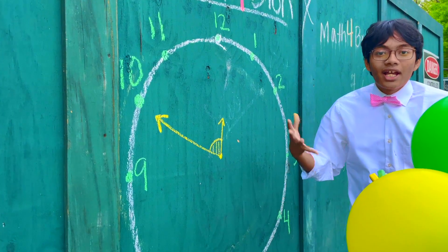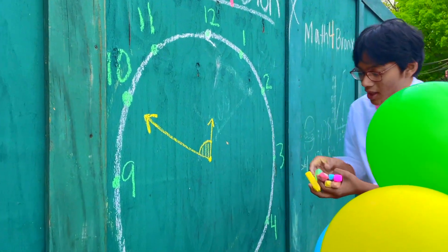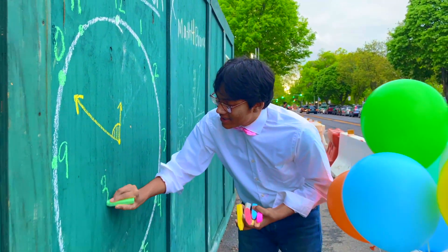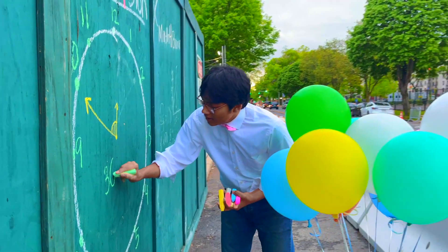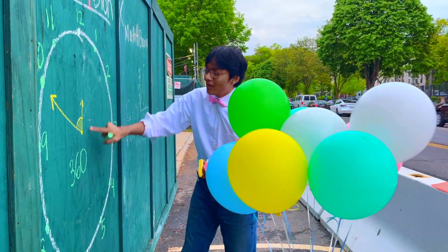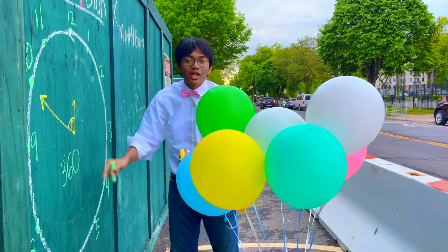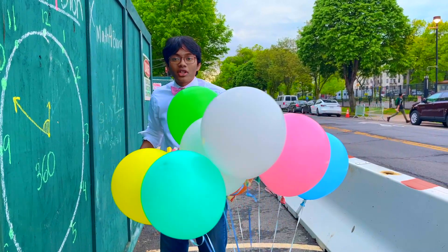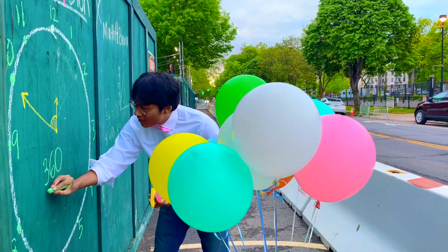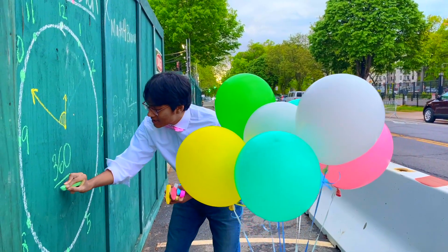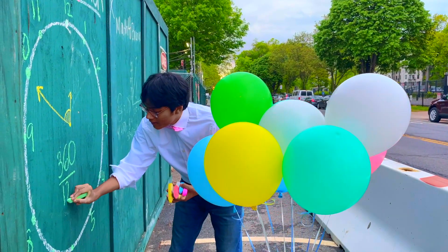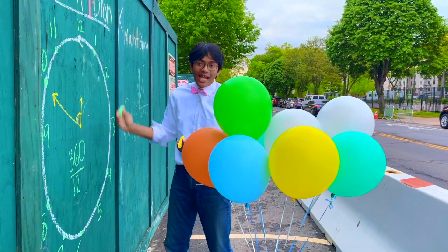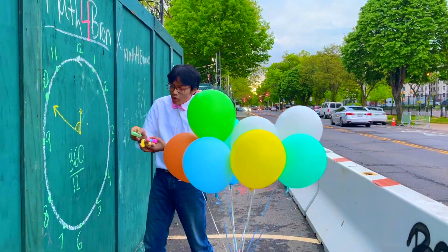The first thing you want to do is find the angle of the whole clock. Since it spans 360 degrees, it's a full circle — 360 degrees is the whole clock's angle. And so now we can use that to find the degree measure of each angle, divided by 12 since there are 12 hours.